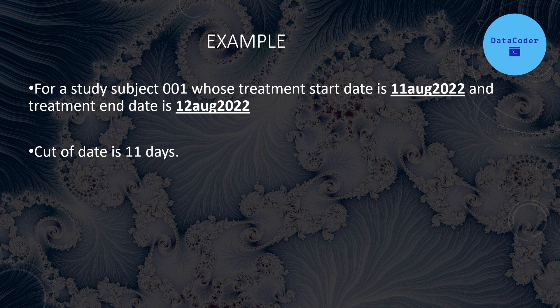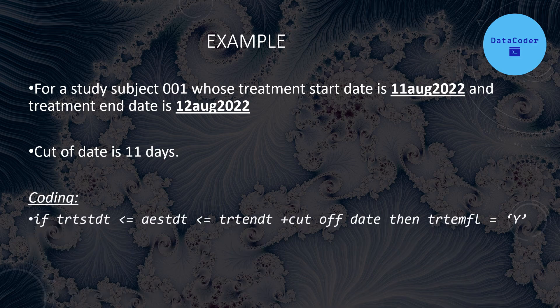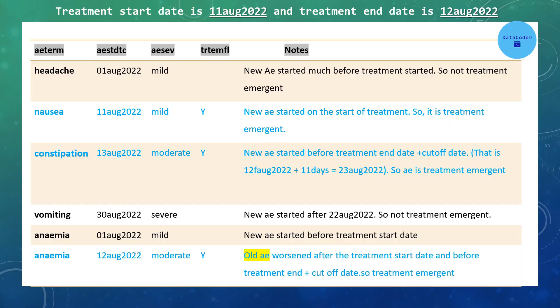Let's look at an example. For subject 001, the treatment start date is 11th August 2022, treatment end date is 12th August 2022, and the cut-off is 11 days. Here is the coding for the first definition: if an adverse event started after the treatment start date and before treatment end date plus cut-off date, then treatment emergent flag equals Y. The adverse events in this example are headache, nausea, constipation, vomiting, and anemia.